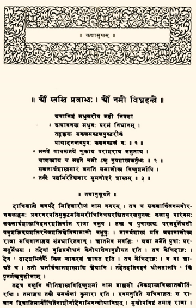The Panchatantra is a series of interwoven fables, many of which deploy metaphors of anthropomorphized animals with human virtues and vices. According to its own narrative, it illustrates, for the benefit of three ignorant princes, the central Hindu principles of Naiti. While Naiti is hard to translate, it roughly means prudent worldly conduct, or 'the wise conduct of life.' Apart from a short introduction, it consists of five parts.